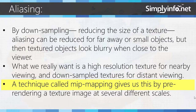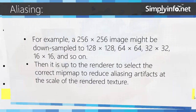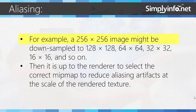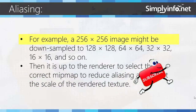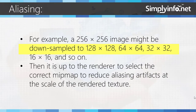A technique called MIP mapping gives us this by pre-rendering a texture image at several different scales. For example, a 256x256 image might be downsampled into 128x128, 64x64, 32x32, 16x16, and so on. Then it is up to the renderer to select the correct MIP map to reduce aliasing artifacts at the scale of the rendered texture.